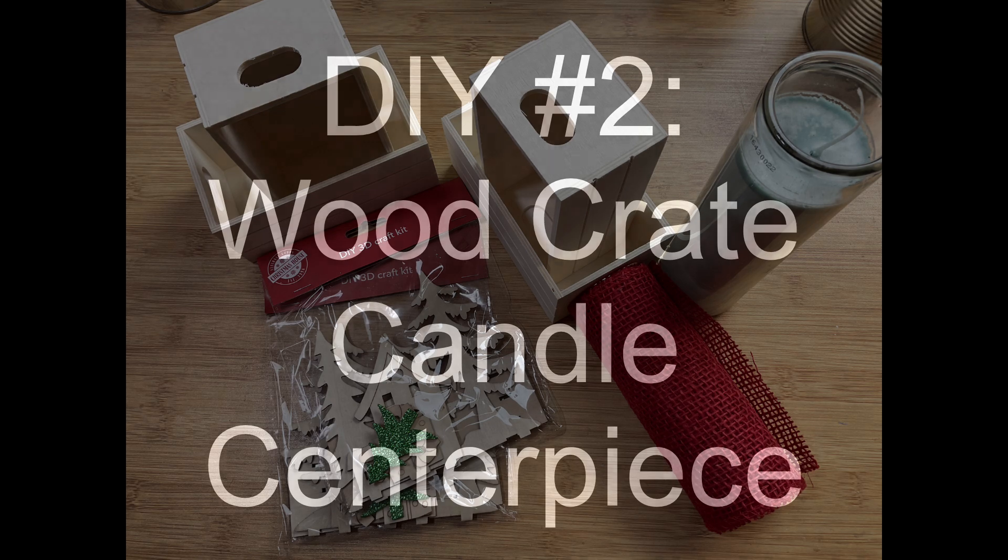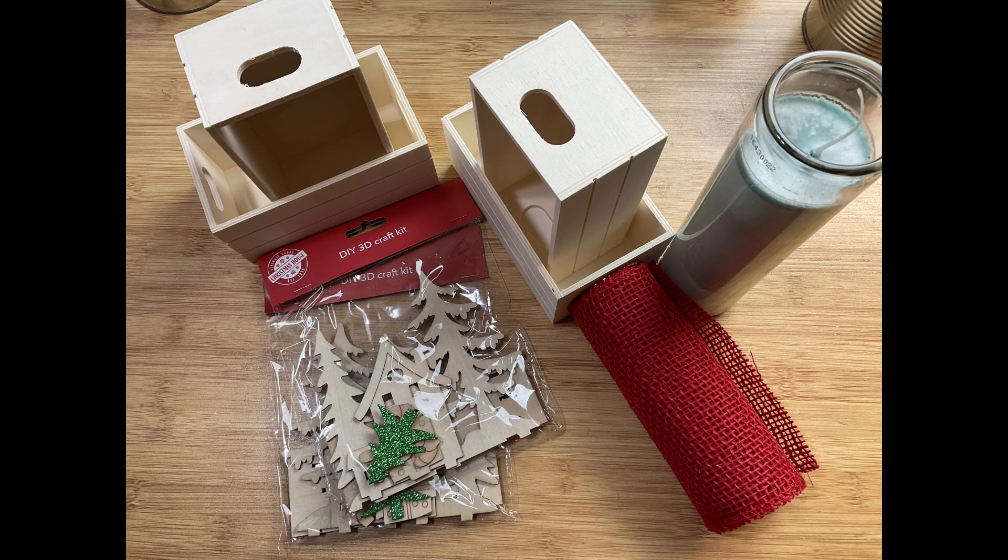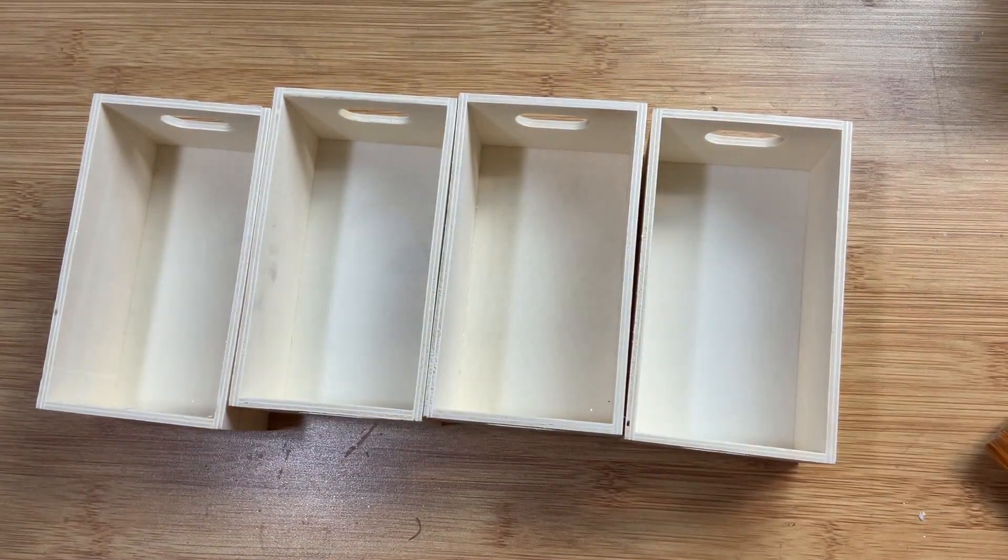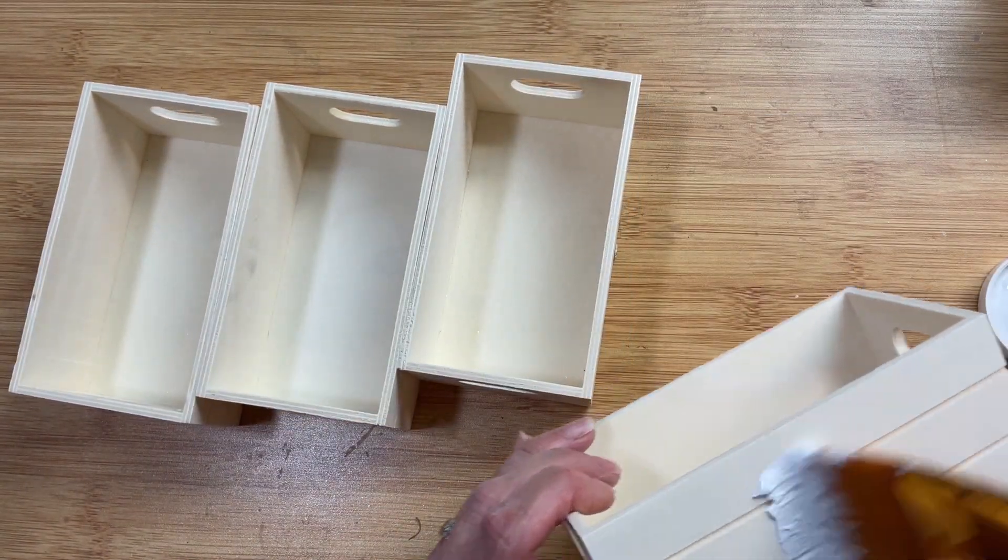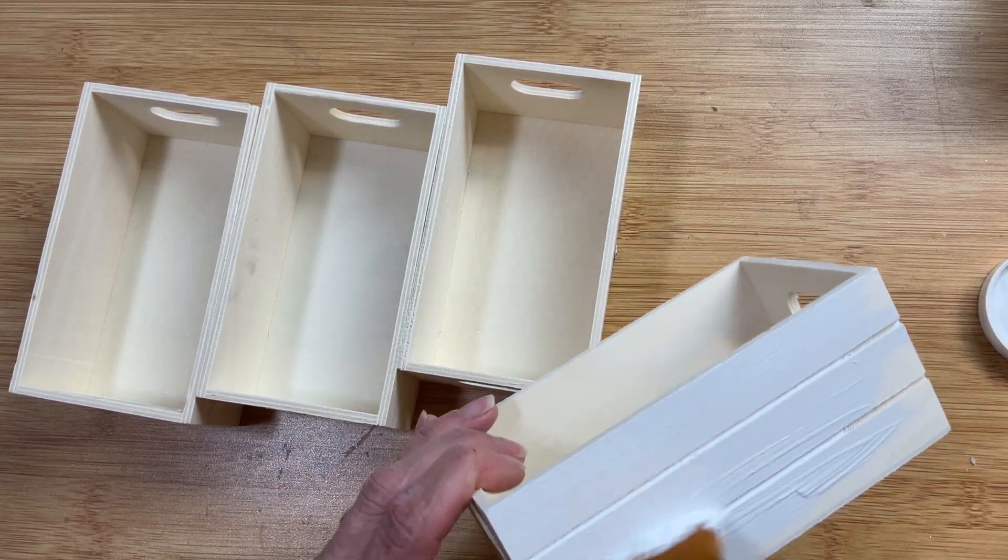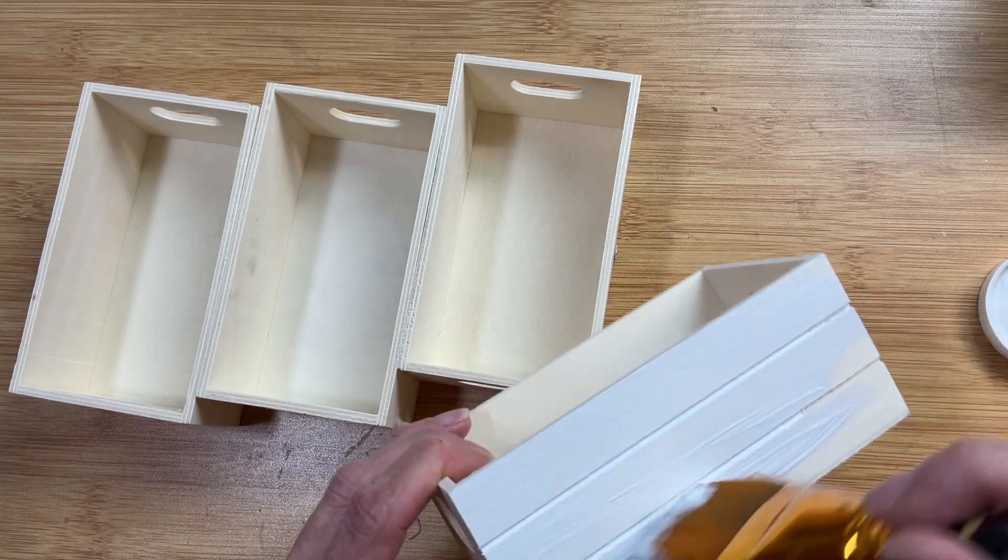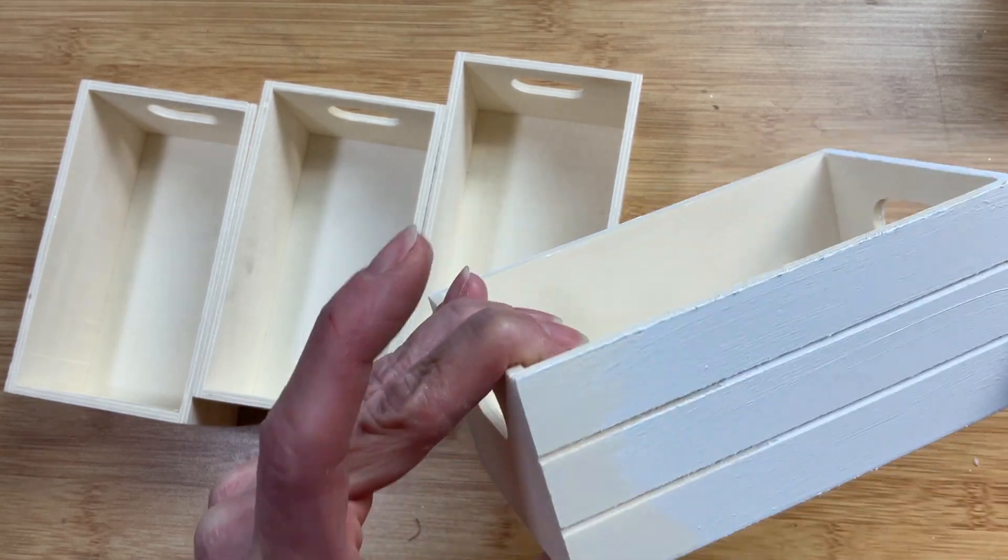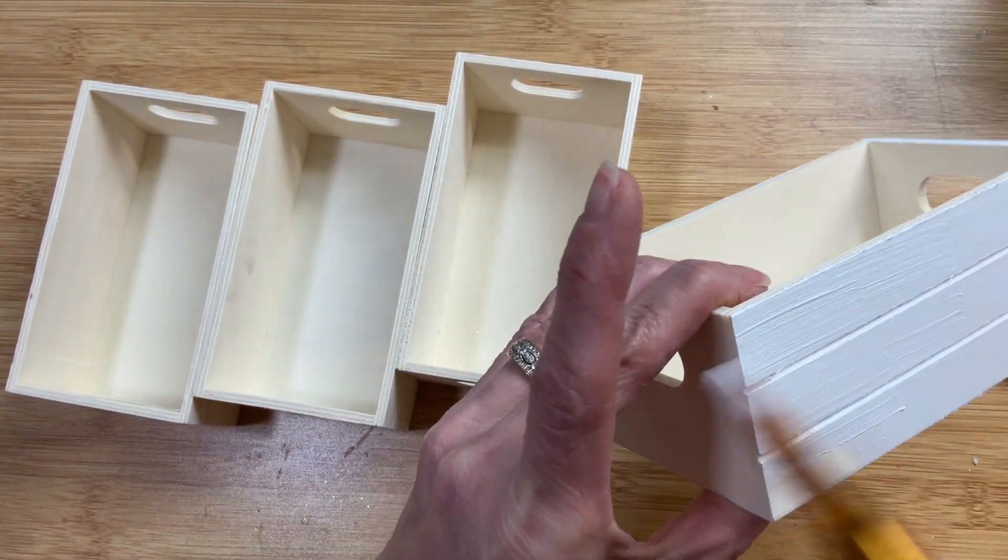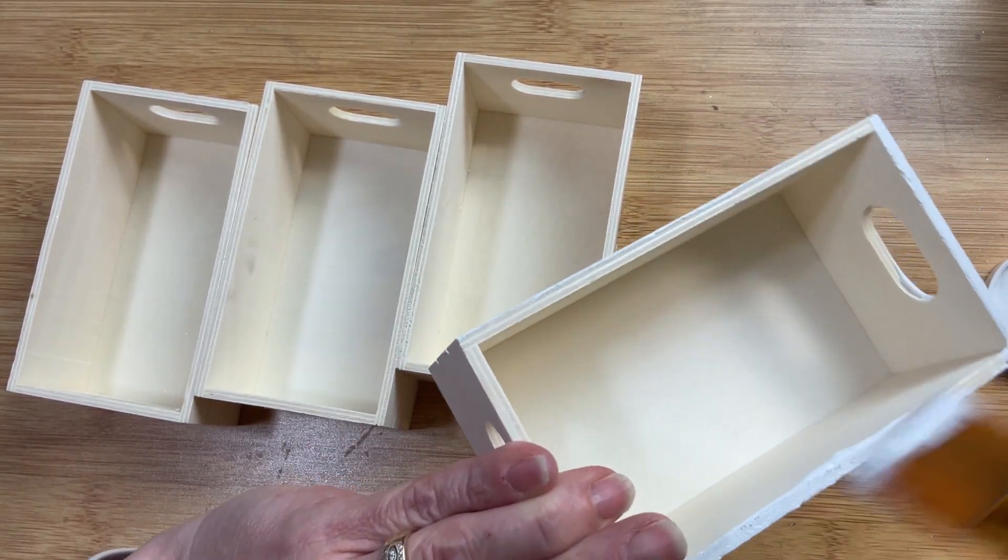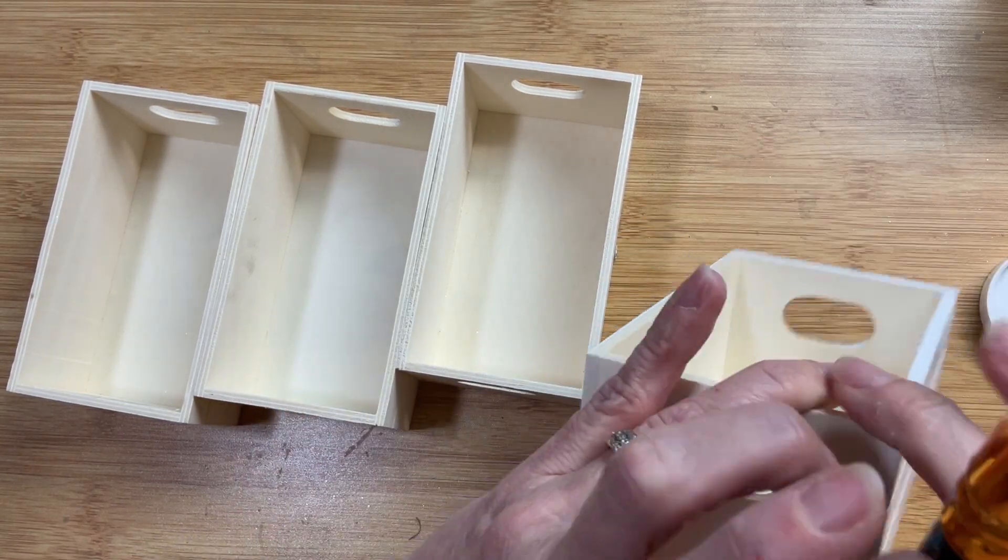For DIY number two I'm going to make a wood crate candle centerpiece. I had some requests for some Dollar Tree wood DIY so I'm going to use four crates and two of these DIY snow scenes as well as one tall pillar candle from Dollar Tree and some burlap. So all four of my wood crates here I'm going to give them one good coat on the outside with white Waverly chalk paint. I'm not going to worry about painting the inside of the crates or the bottom and I am going to go up a little bit on the lip here you can see around the edge at the top as well.